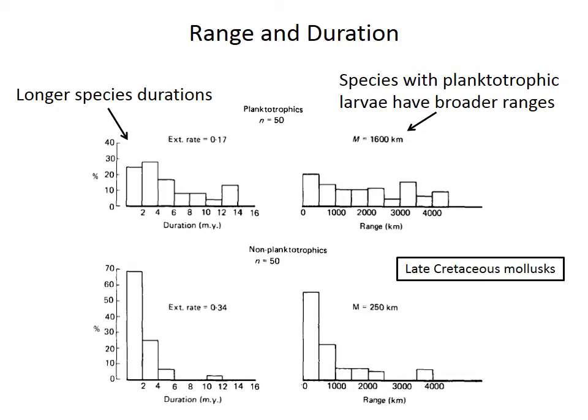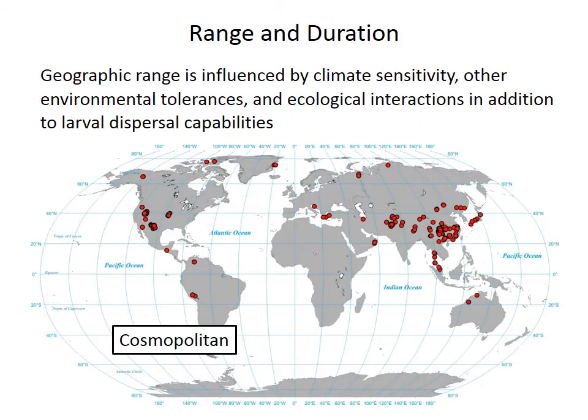The relationship between smaller range and greater extinction risk arises, in large part, because narrowly distributed species can be more likely to be wiped out by chance events, whereas species with a broad distribution are going to contain subpopulations that have different tolerances for environmental conditions, and some of those subpopulations are going to be more adapted to dealing with or surviving environmental changes. Larval dispersal capabilities are important influences on the geographic range of a species, but they're not the only control — climate sensitivity or other environmental tolerances, as well as ecological interactions, also control the distribution of a species.